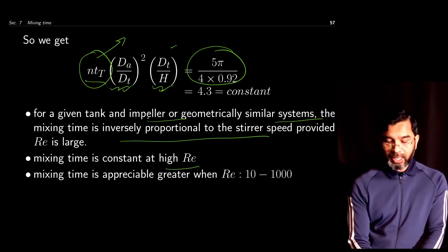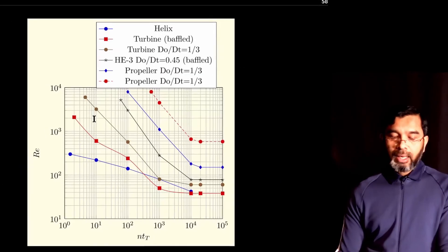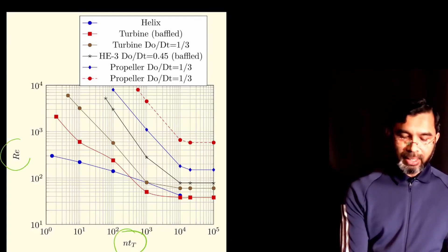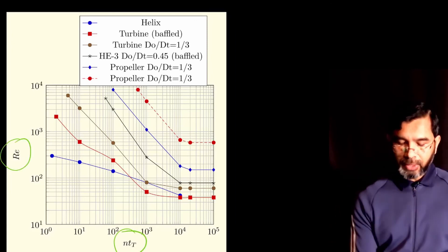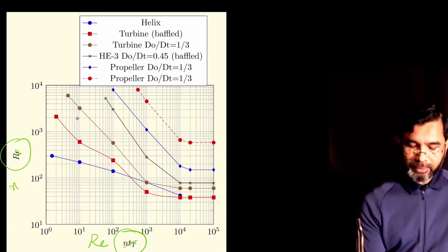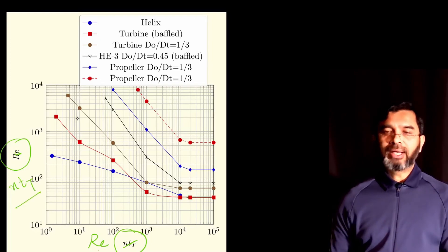Mixing time is appreciably greater when Reynolds number is between 10 and 1000. Experimental values of the relation between ntt and Reynolds number are found in the literature. If you know the Reynolds number, you can find ntt, and from there you can find the mixing time.